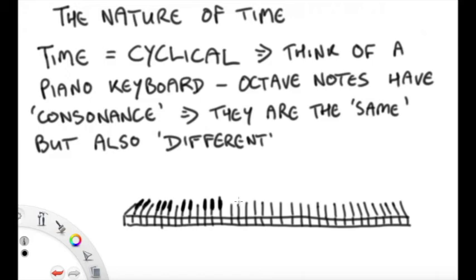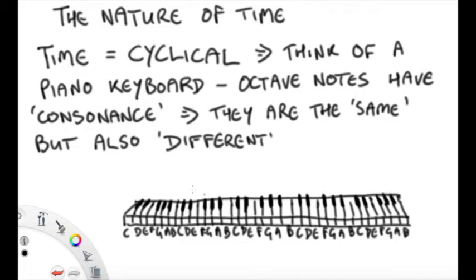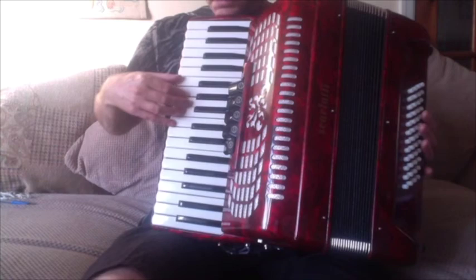If they're played together, they've got what Luke Clossie called consonance. In reality, what happens is the octave notes have this so-called consonance because the air vibrates with either double or half the frequency, so they kind of map onto each other.